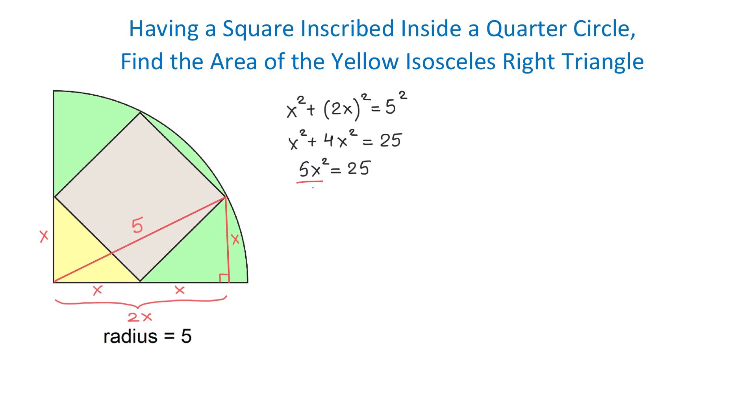Let's divide both sides by 5. Then x² = 5 and x = √5.